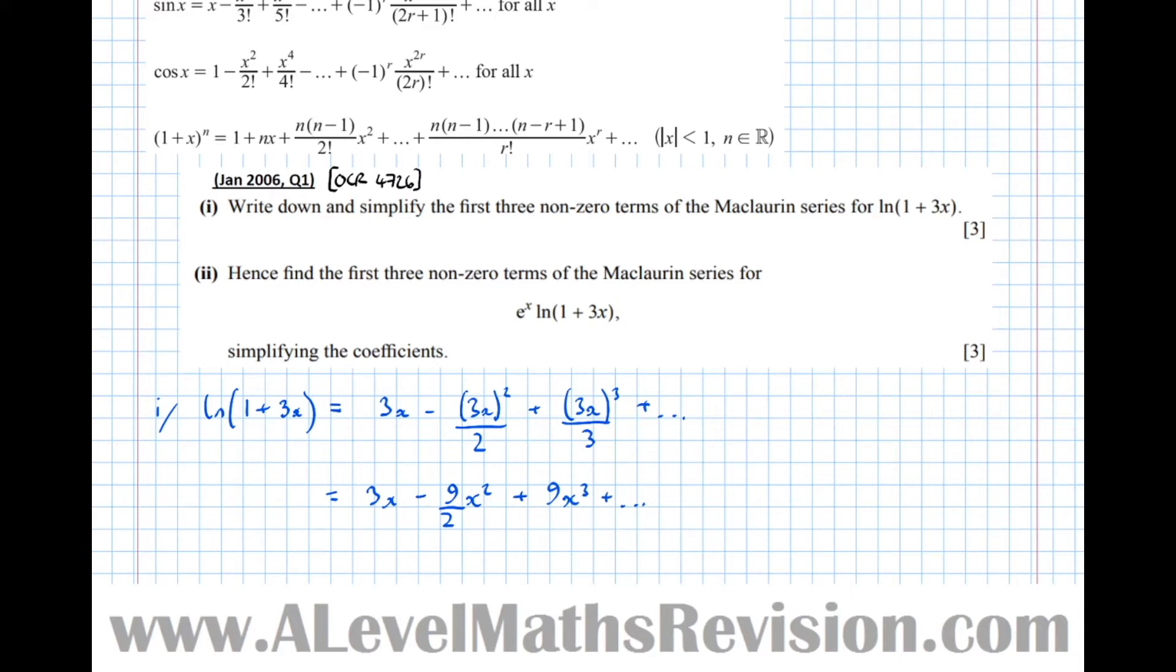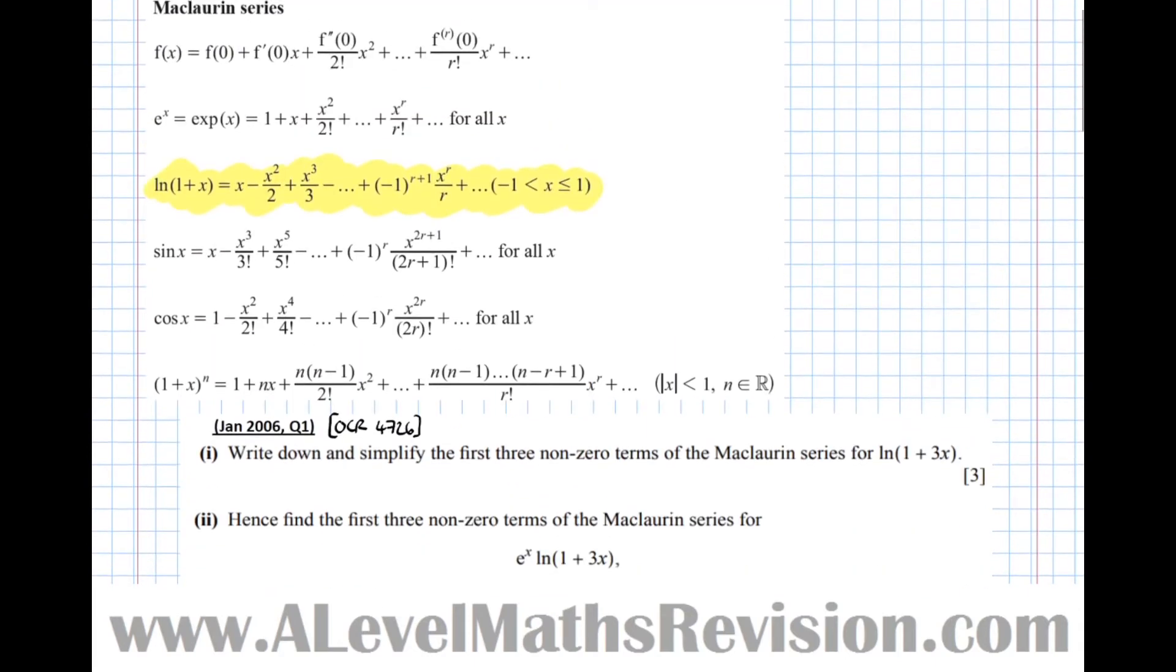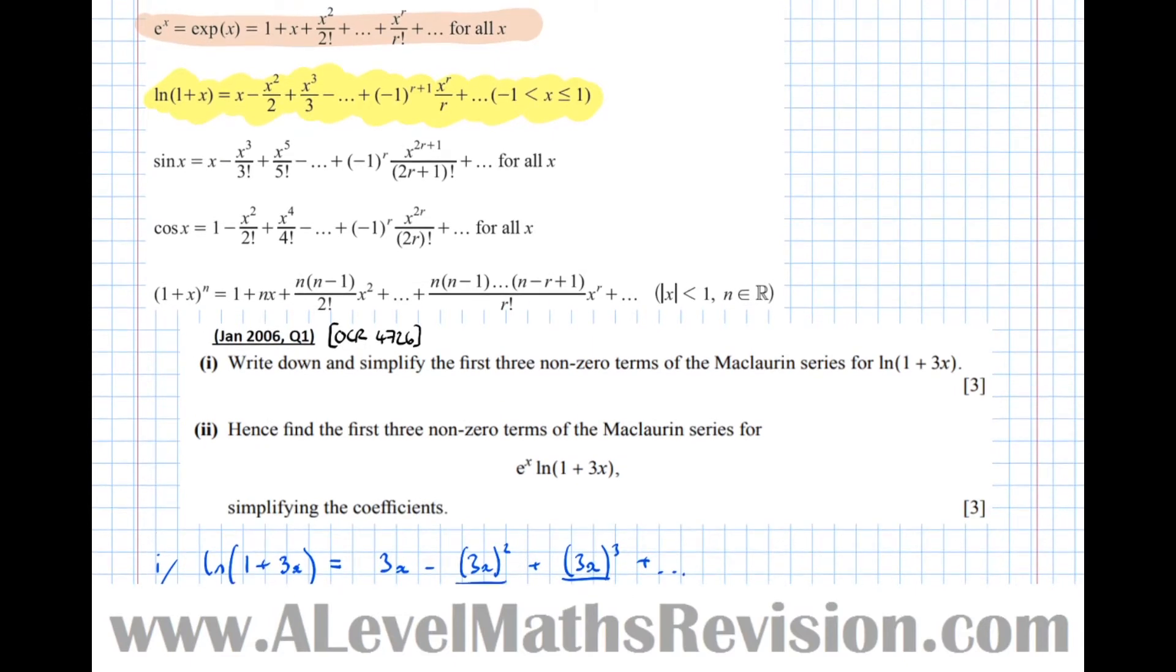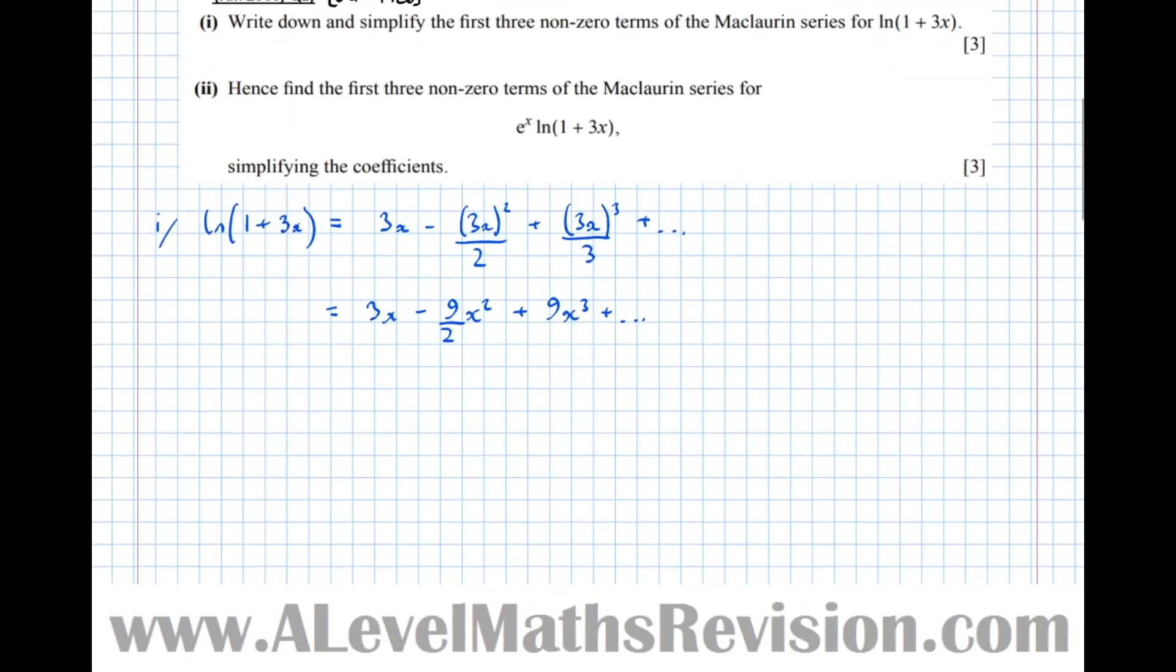So part 2 asks us to find the first three non-zero terms of the Maclaurin series for e to the x times the thing we've just found. Actually looking up here, we've got an expansion for e to the x as well that we can use. So that's this one here, so if we use that, we get 1 plus x plus x squared over 2 factorial.